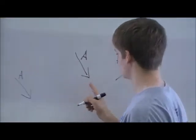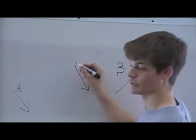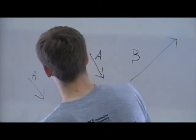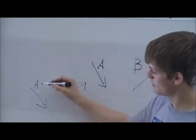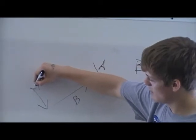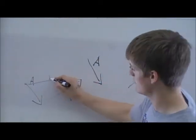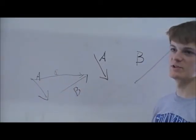Draw A and take the head of B and put it at the tail of A. And then draw a point from the head of A to the tail of B and you have C, A plus B.